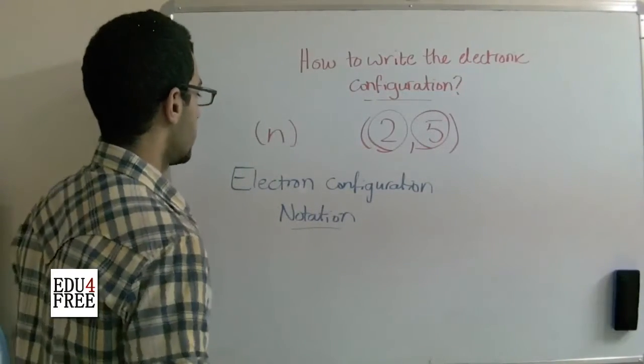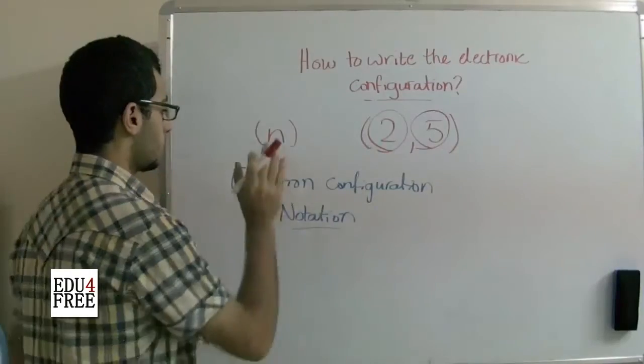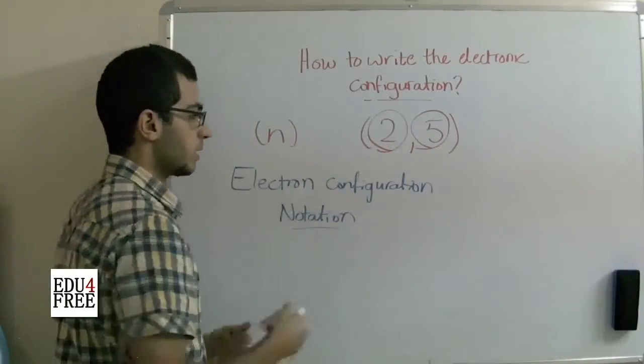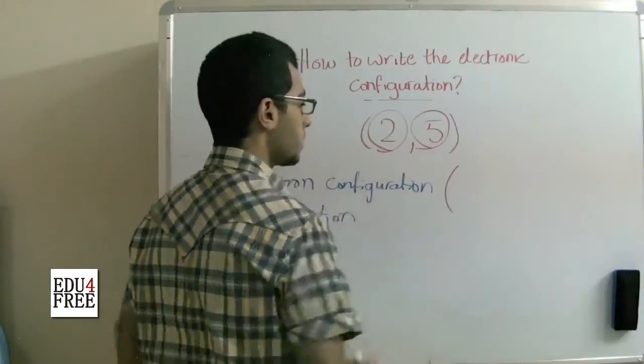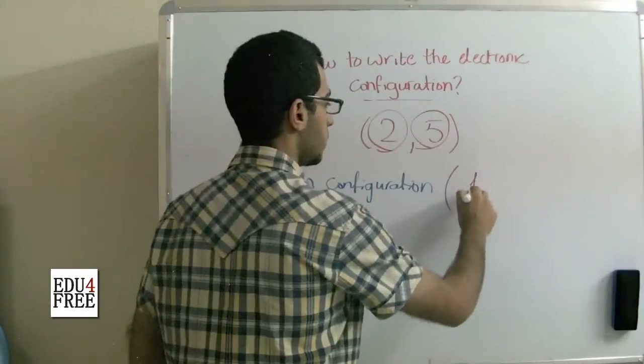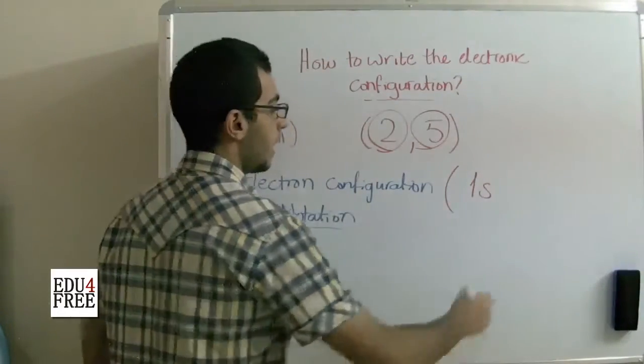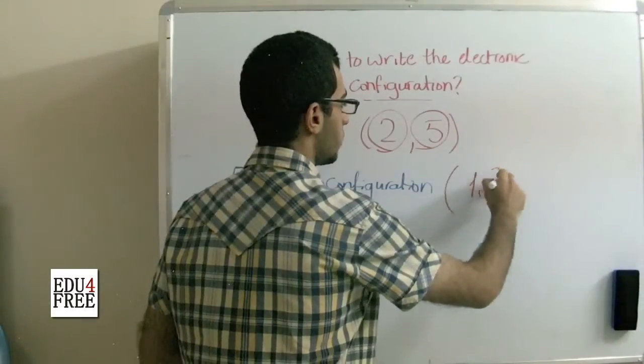So here we notate the electronic configuration. The first energy level has the 1s orbital, and this is occupied by 2 electrons.